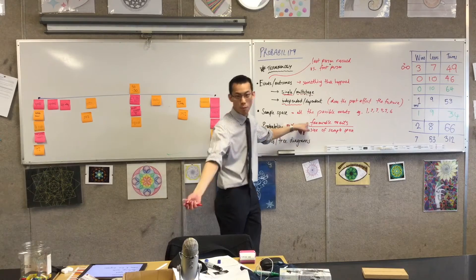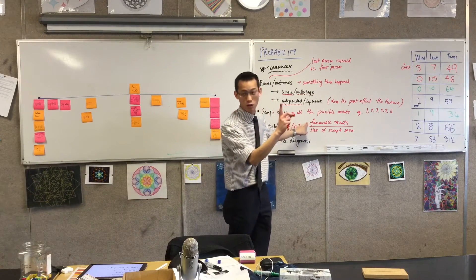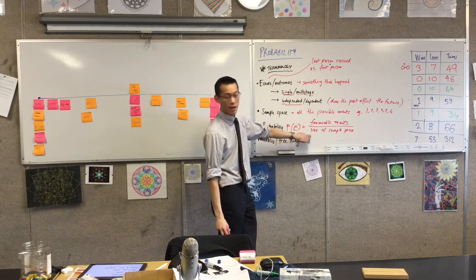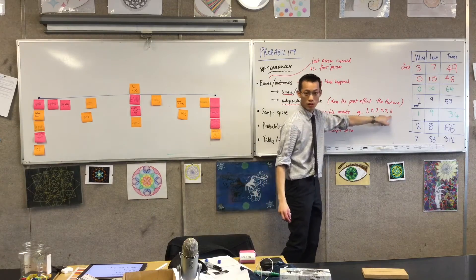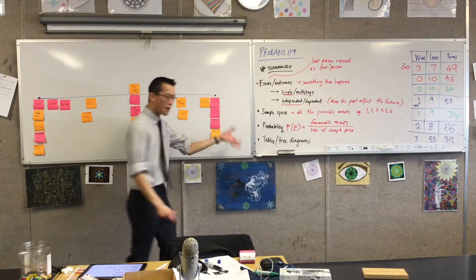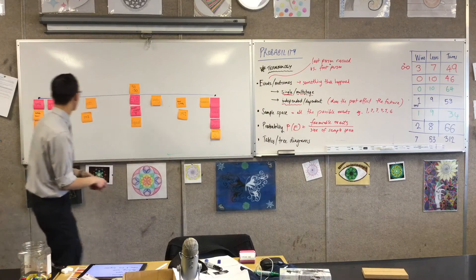Favorable events for, say, getting caught by Voldemort - there's one of them, there's only one way to get caught by Voldemort. And what's the size of the sample space? Well, it's six: one, two, three, four, five, six.